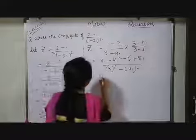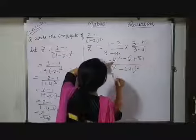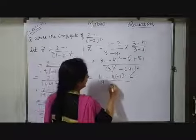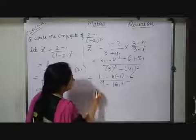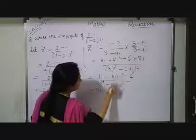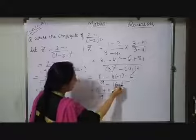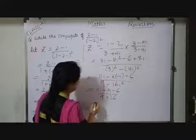Here I can write 11i minus 4i square that is minus 1 minus 6 upon 3 square 9 minus 4 square 16i square. So, it is equals to 11i minus minus plus 4 minus 6 upon 9i square that is minus 1. So, here minus minus plus 16.